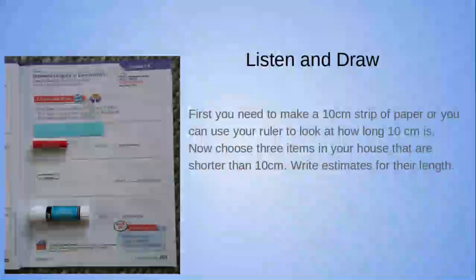Our next example is the paper clip. Now that I have a good estimate for the battery, I can use both the 10-centimeter strip and the battery to help me figure it out. I estimated the battery at about 5 centimeters, and the paper clip looks just a little bit shorter than that, so I would say the paper clip is about 4 centimeters.